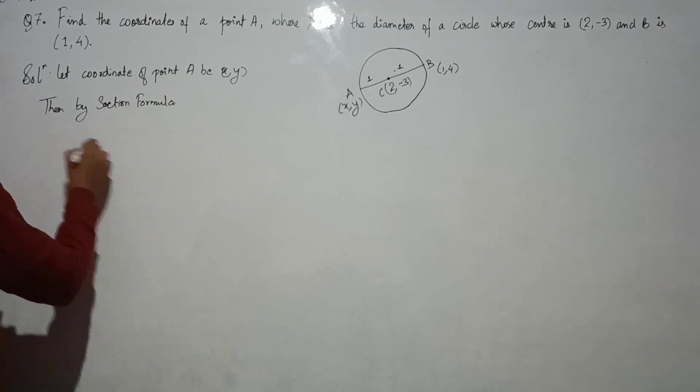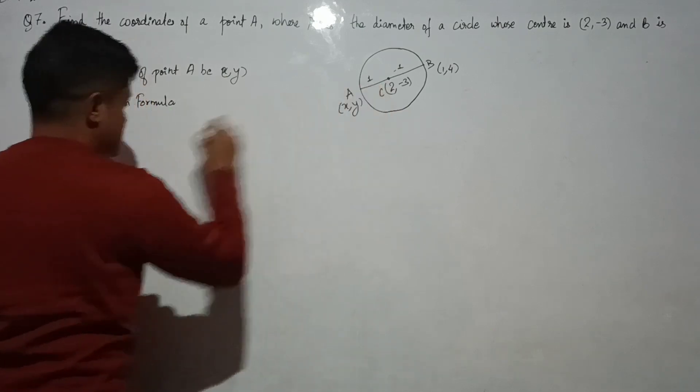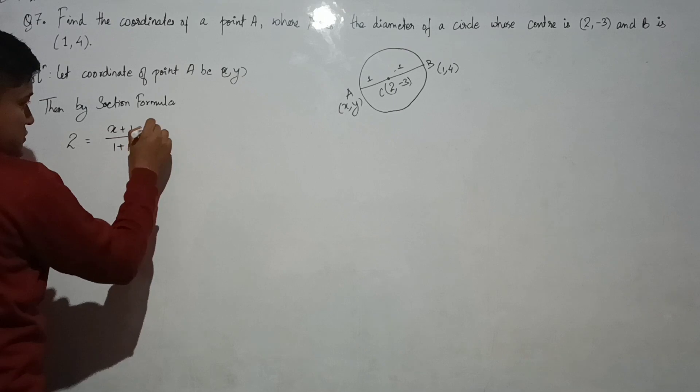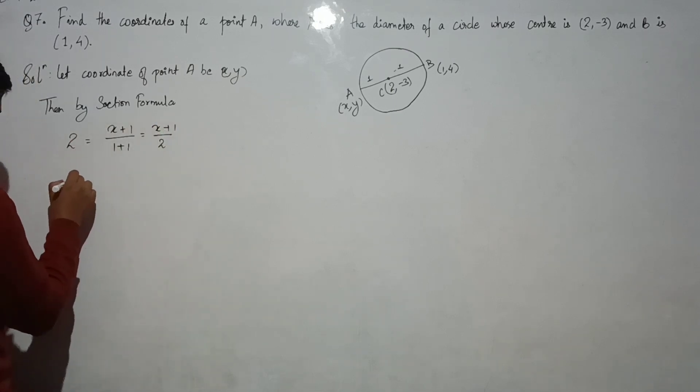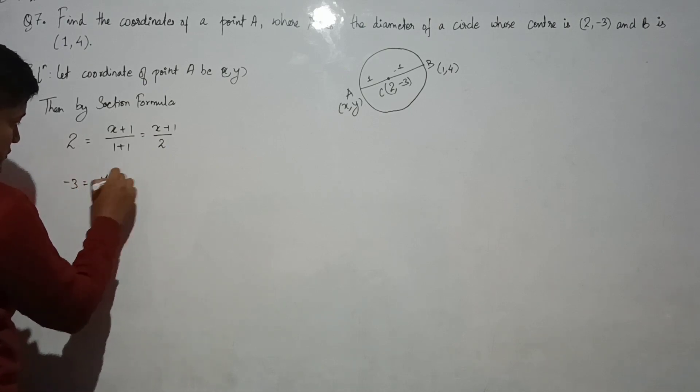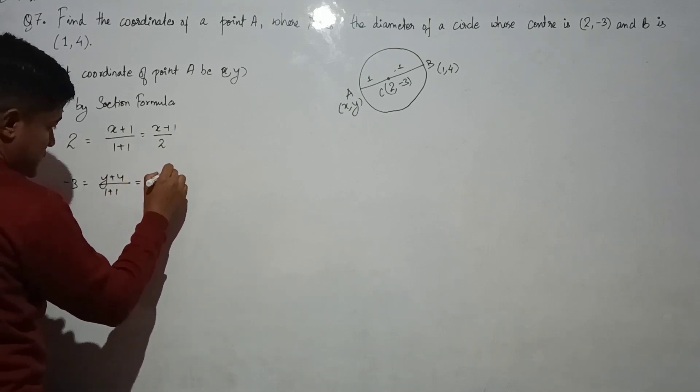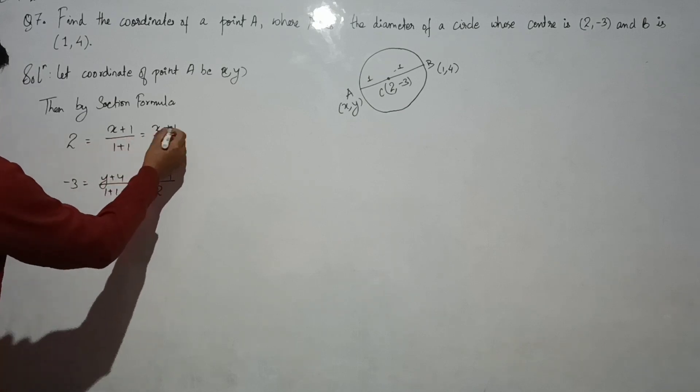So if 1 is to 1 ratio is happening, then 2 equals to (X plus 1) by (1 plus 1) equals to (X plus 1) by 2. Similarly, minus 3 equals to (Y plus 4) by (1 plus 1) equals to (Y plus 4) by 2. So from here X plus 1...